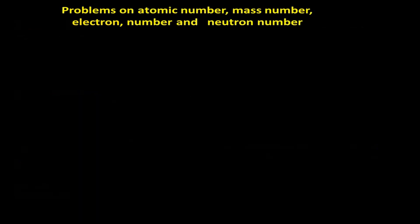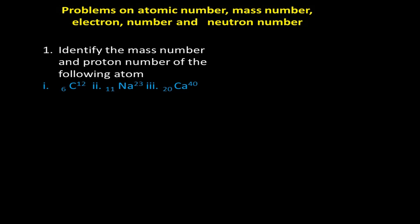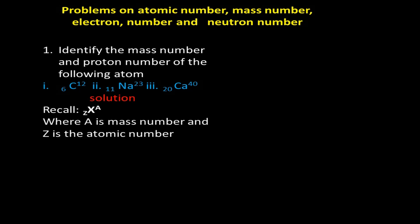Problem 1: Identify the mass number and proton number of carbon, sodium, and calcium. Solution: For carbon (i), mass number = 12 and atomic number = proton number = 6. For sodium (ii), atomic number = proton number = 11 and mass number = 23. For calcium (iii), atomic number = proton number = 20 and mass number = 40.